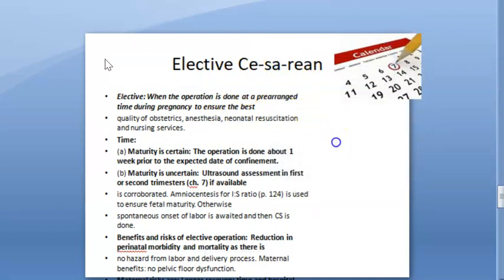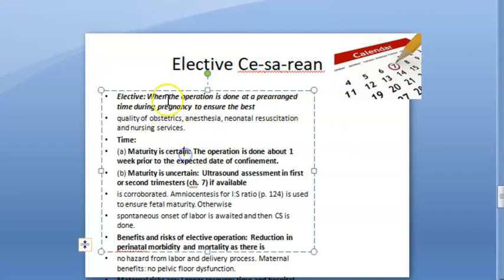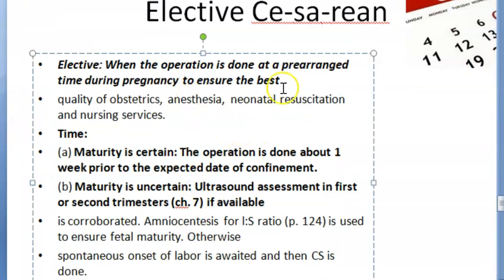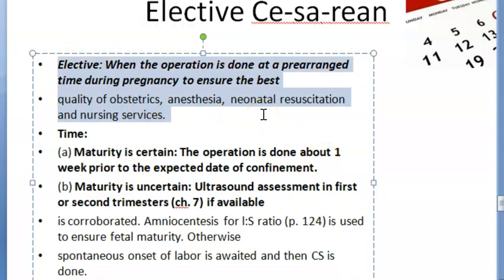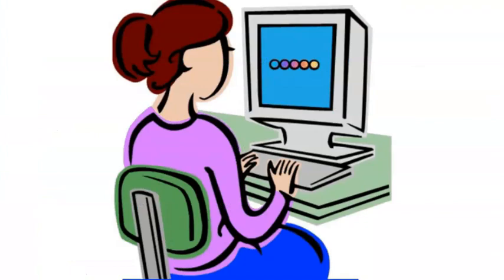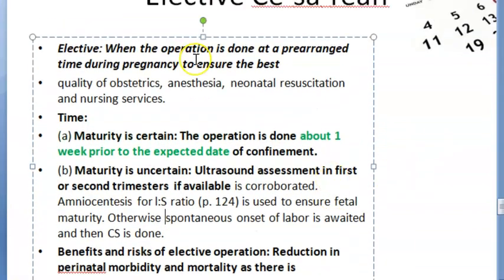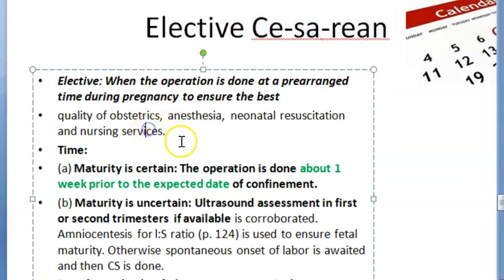Coming to elective caesarean — basically the operation is done at a pre-arranged time. You are choosing to do it at a specific time. From the doctor's perspective, the quality of obstetrics, the available doctors, anaesthesia, neonatal resuscitation team, and nursing services will all be available. So this is when you pre-arrange the time and the best team is available at their best potential.